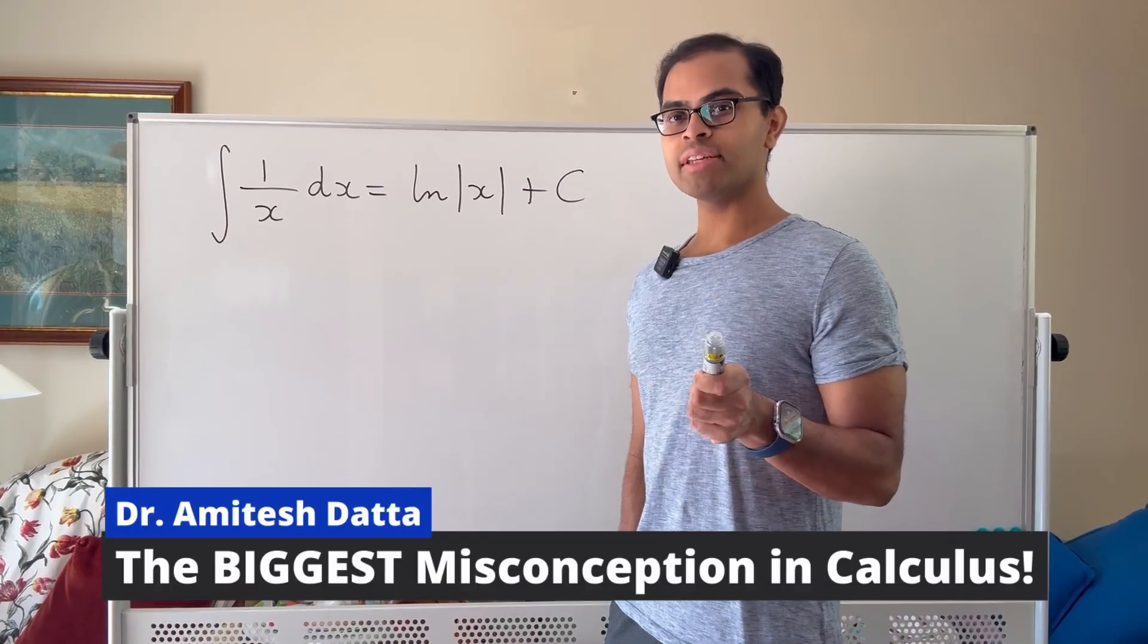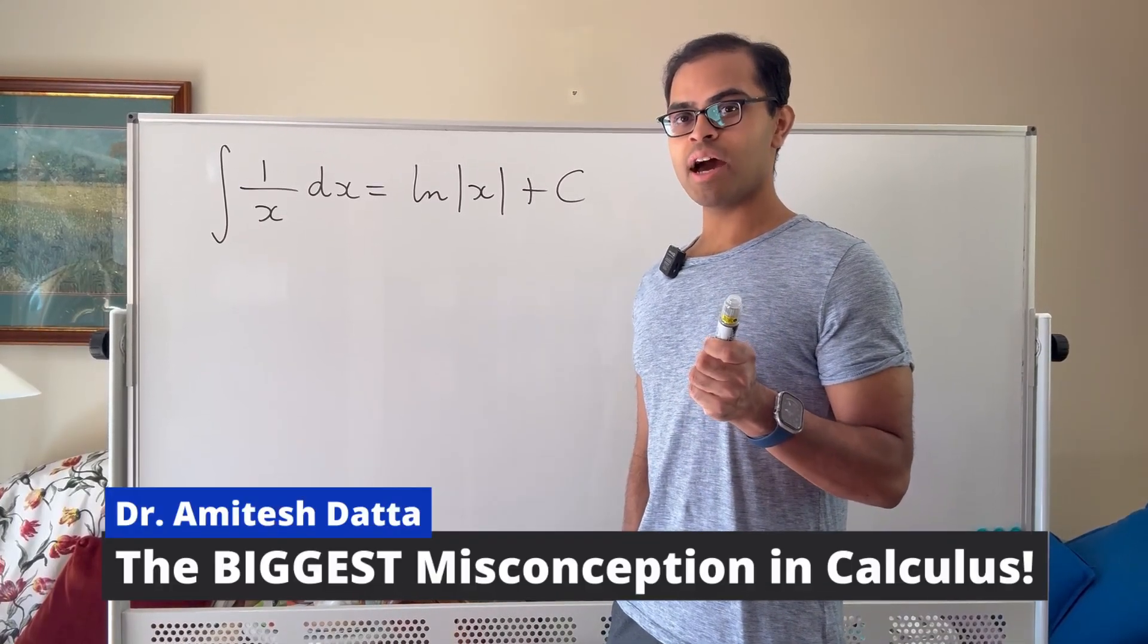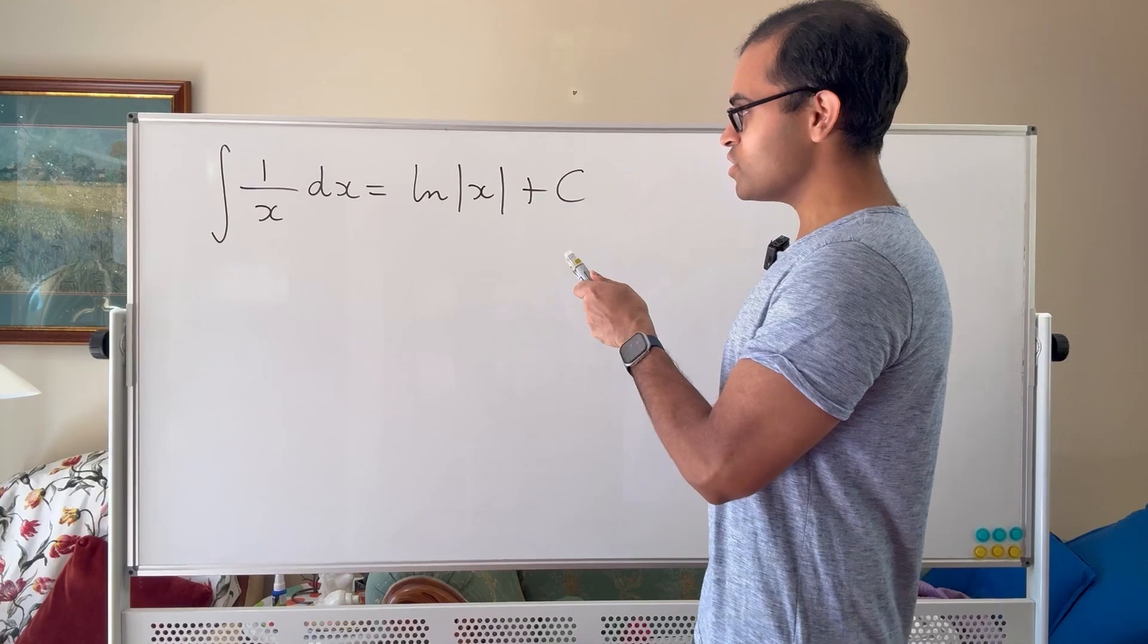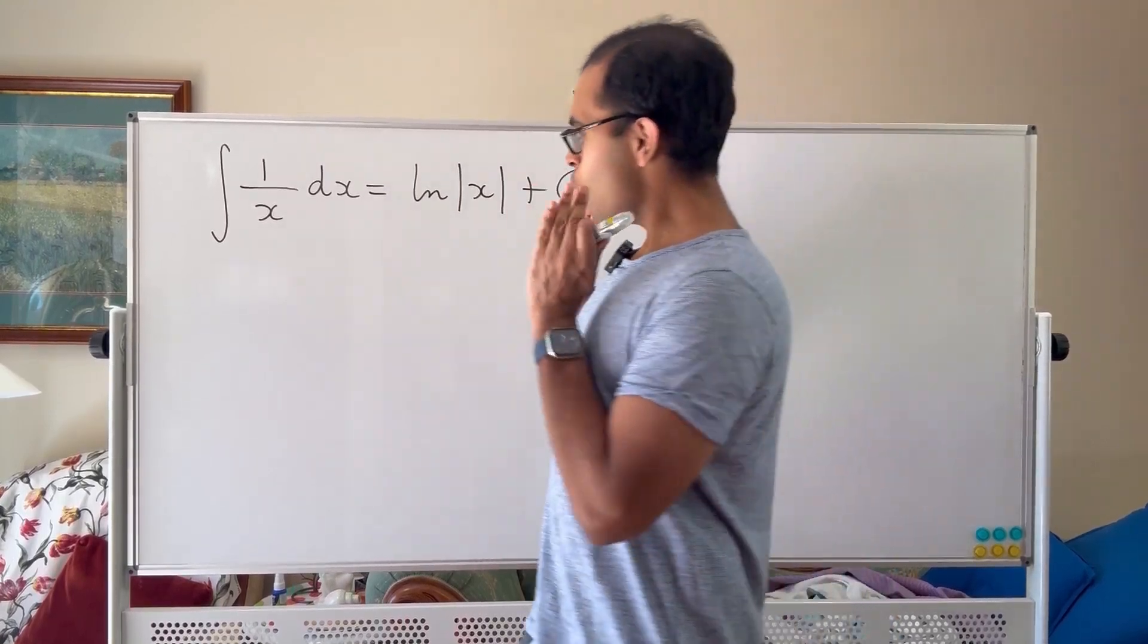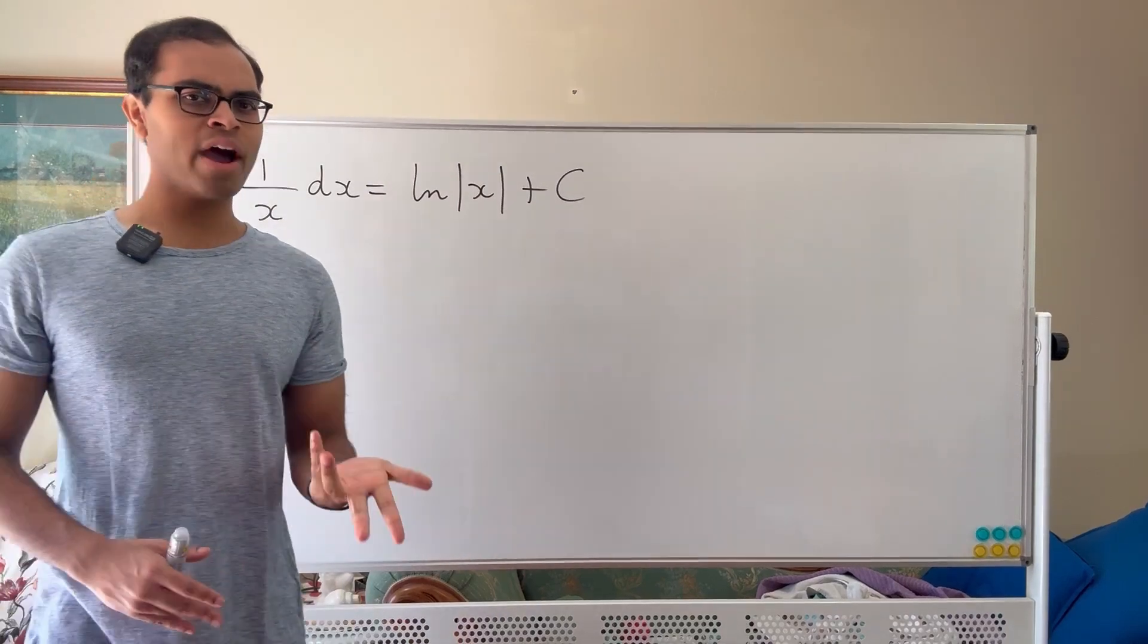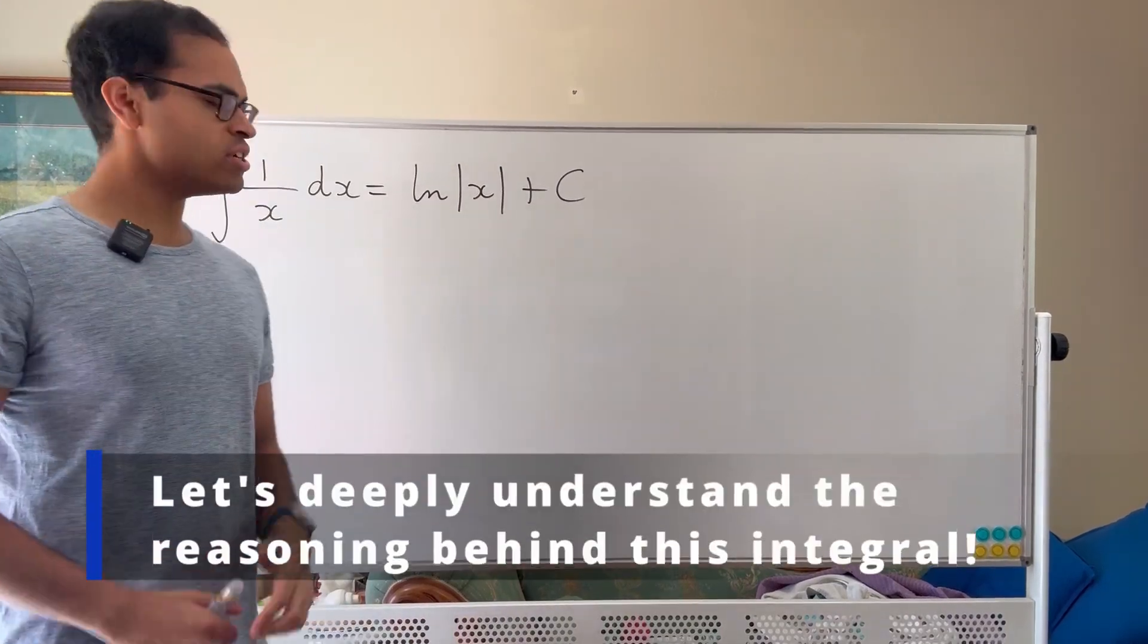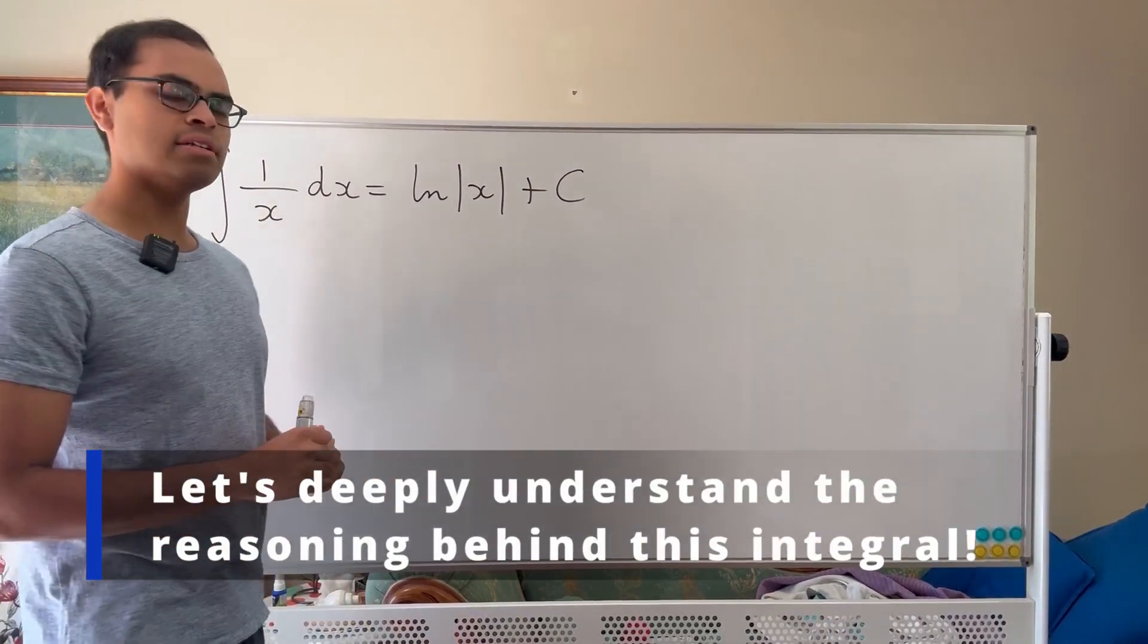Your calculus teacher or professor lied to you and in this video I'm going to explain why. The definite integral of 1 over x dx is log absolute value x plus a constant. Why is this false? Well first of all let's try to figure out why it's true, which may seem counterintuitive, but what's the reasoning behind this?